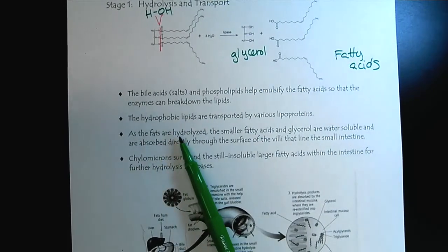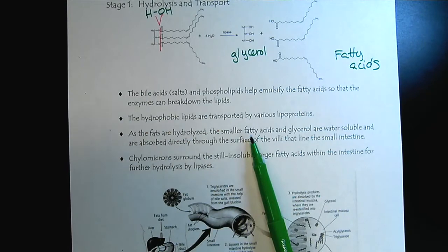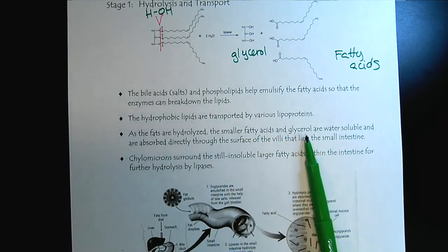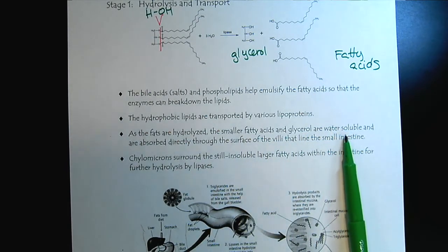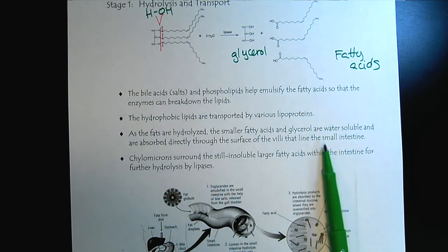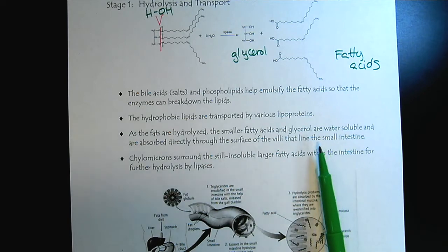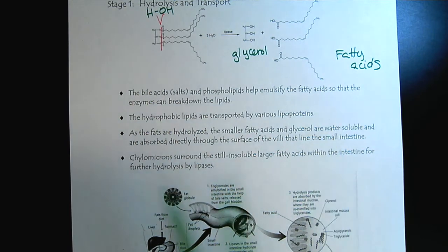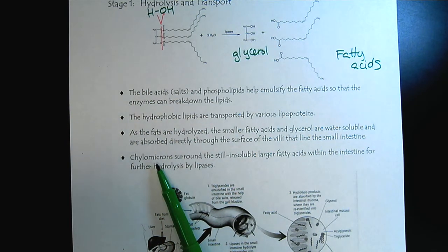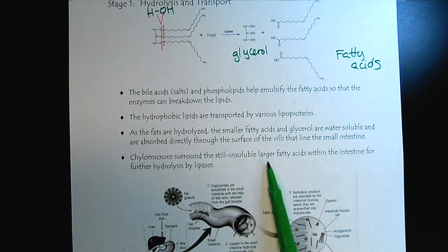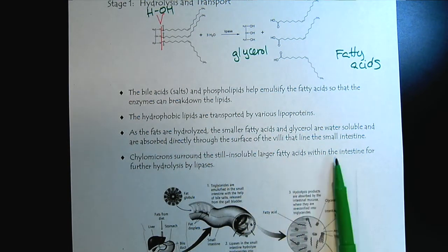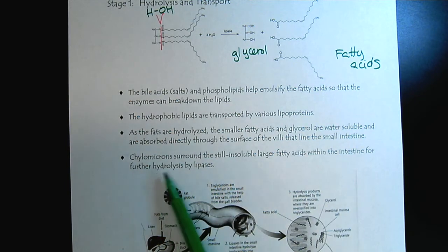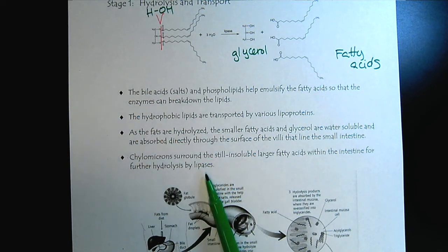Even once we break it down this far, we still know that fatty acids are not water soluble. So that's why we need those additional lipoproteins. So the hydrophobic lipids get transported that way. So then the hydrolysis continues until we get smaller fatty acids and glycerol, which are finally water soluble.